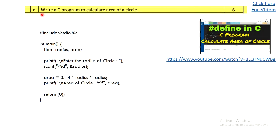The next question asks to write a C program to calculate the area of a circle. This is a very easy question and you can easily score six marks. A detailed explanation of this program is available in a linked video. It is a simple small program — you already know the formula to calculate area of a circle, just put it in the code and print the result.